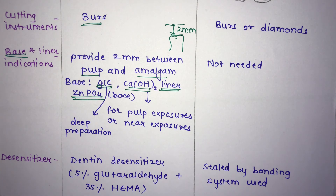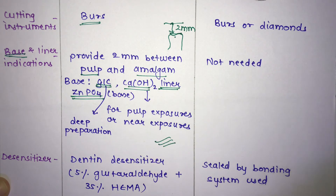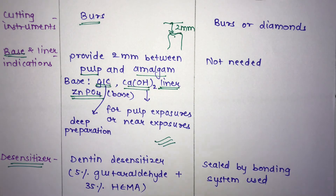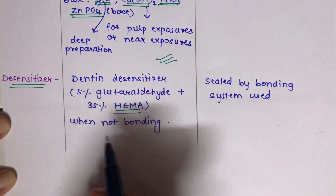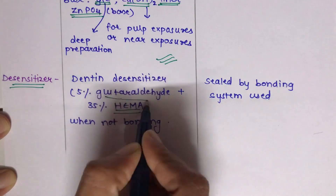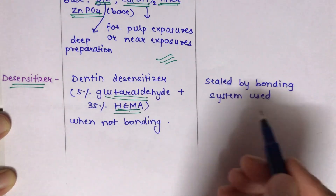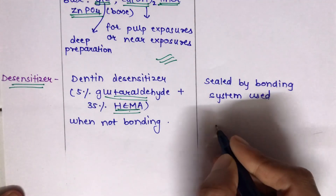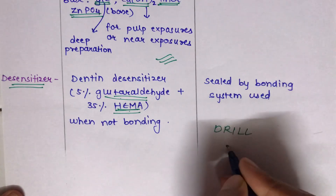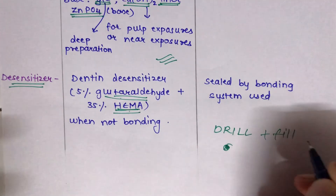Base and liner are not required in composite. The last difference is the dentin desensitizer, which is indicated for hypersensitivity of exposed dentin. In amalgam, the desensitizer is 5% glutaraldehyde plus 35% 2-hydroxyethyl methacrylate (HEMA) — this is not a bonding agent. In composite, desensitization is handled by the bonding system, which also manages retention, resistance, and sealing.